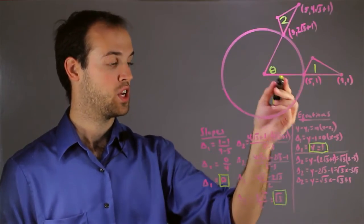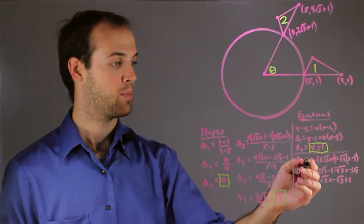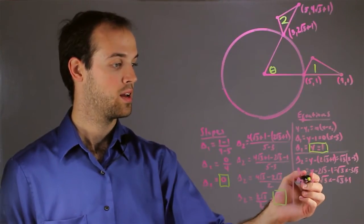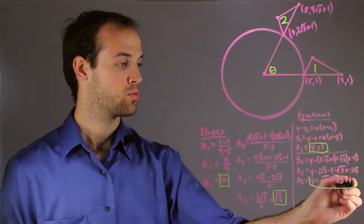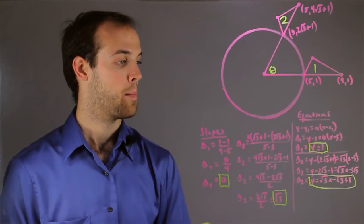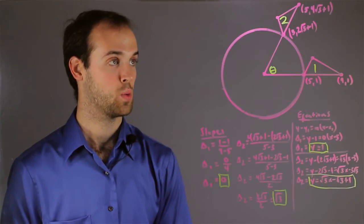And for the base of triangle 2, again a little more complicated, but once I simplify all the work, I get that y equals root 3x minus root 3 plus 1.